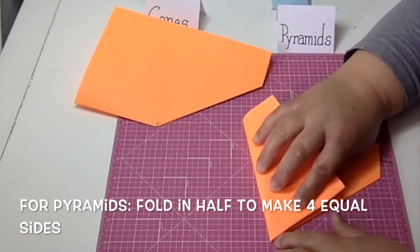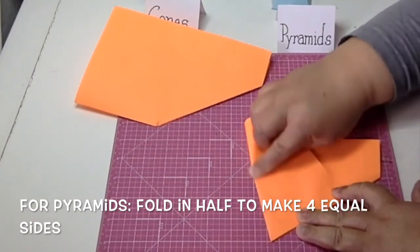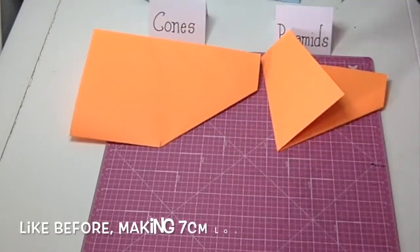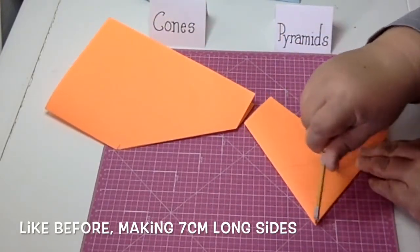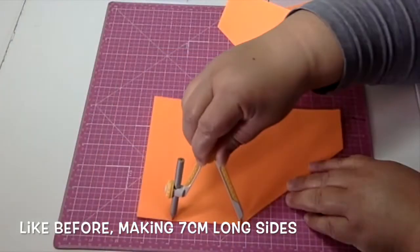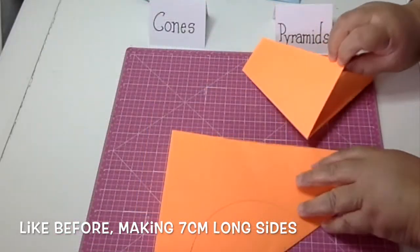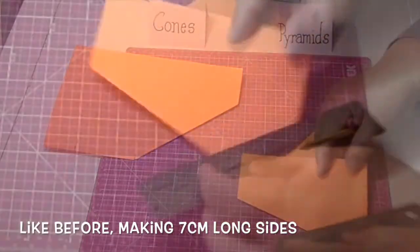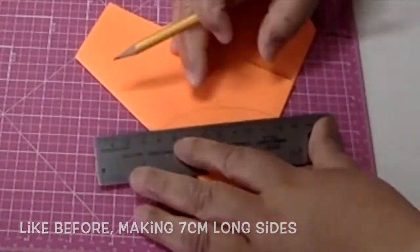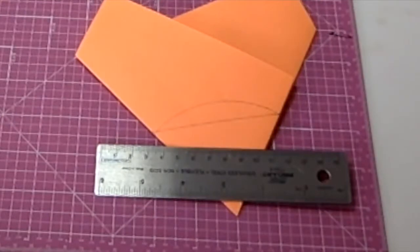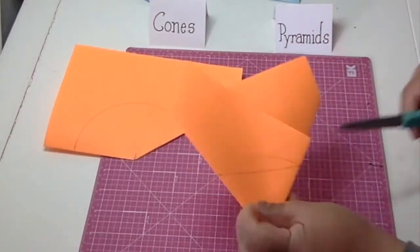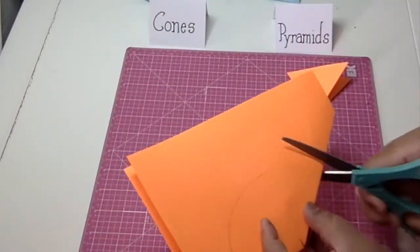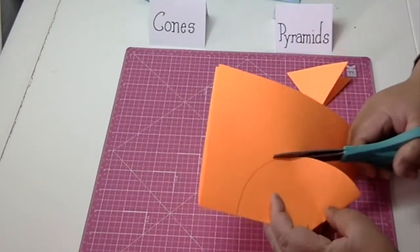And then with my compass, make my seven centimeter curve. And for the pyramid, I'm going to meet those, the two edges of that curve together with a line, so that my base will become a square instead of a circle. Again, for the cone, I'm just going to follow that curve.